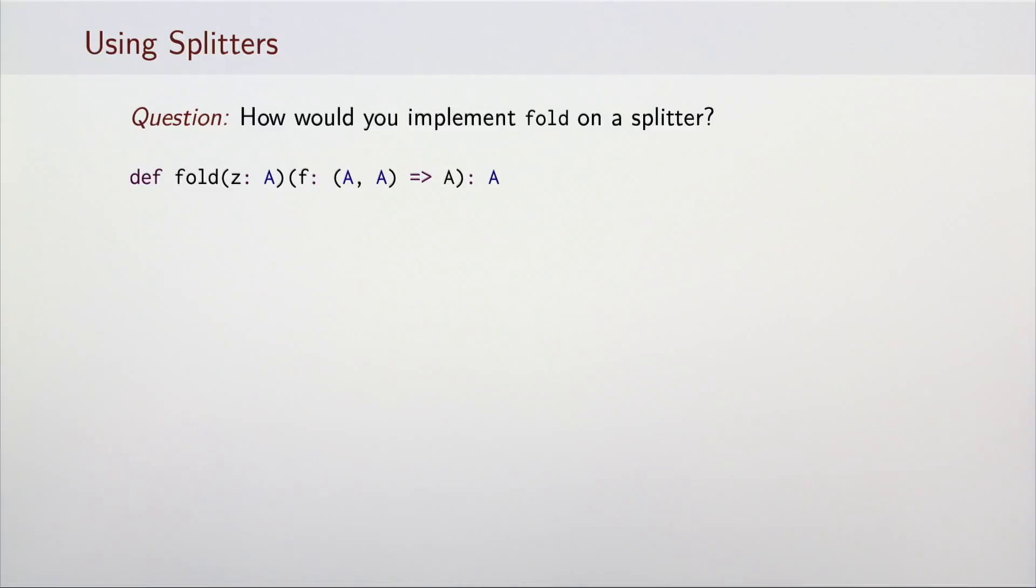Let's see one possible implementation. The idea will be to create a reduction tree, and when the number of elements drops below a certain threshold, revert to the sequential case. In the first line, we use the splitter's method remaining to get an estimate on the number of elements. If this number is below some threshold, we call the alternative sequential foldLeft method.